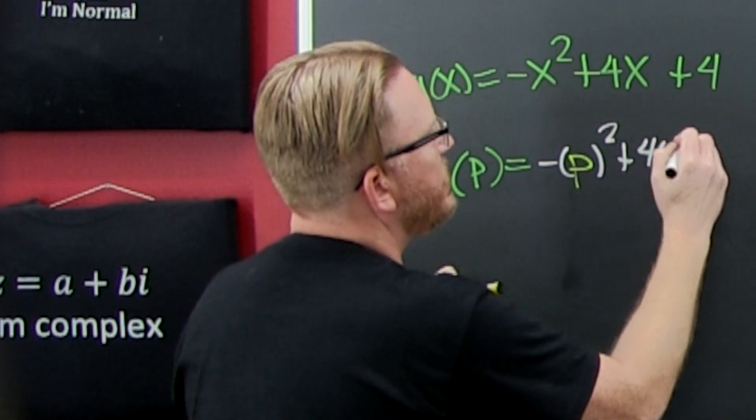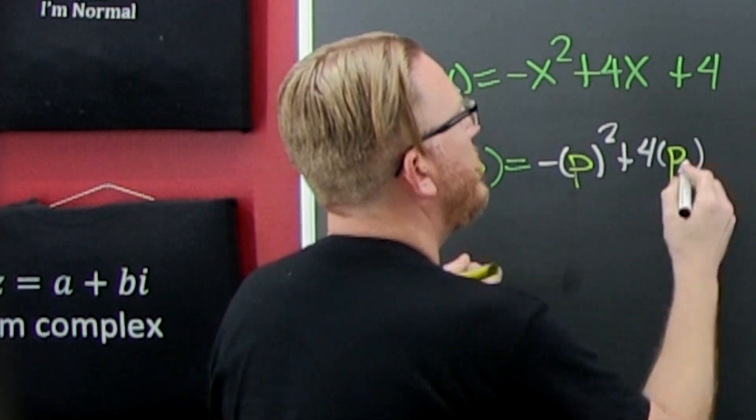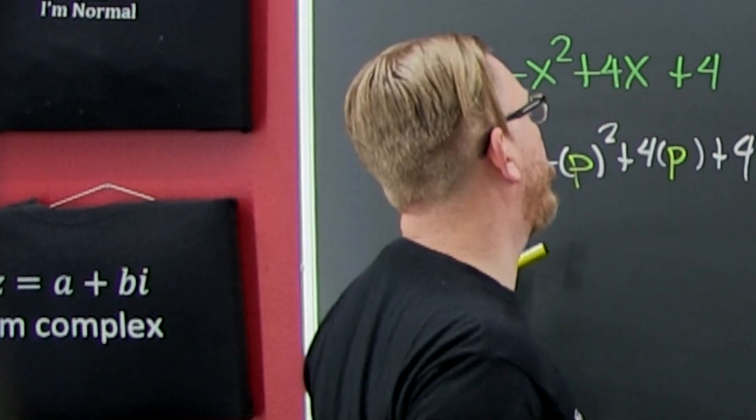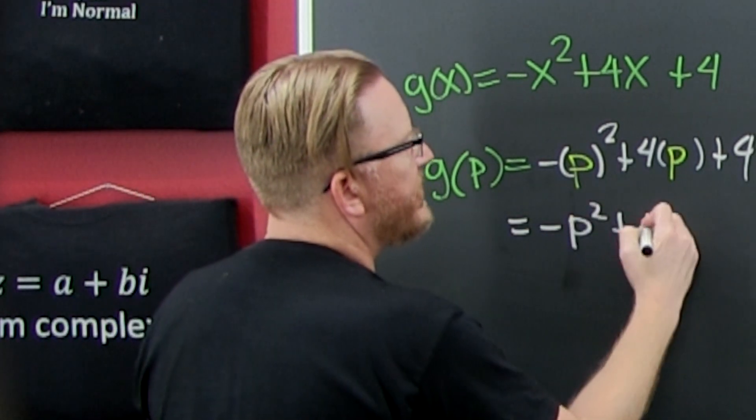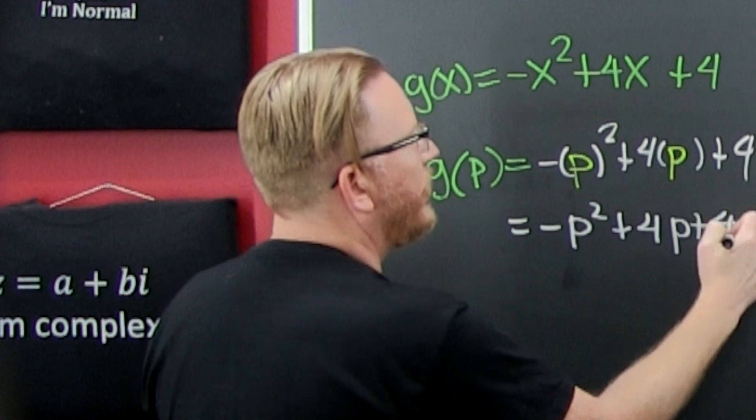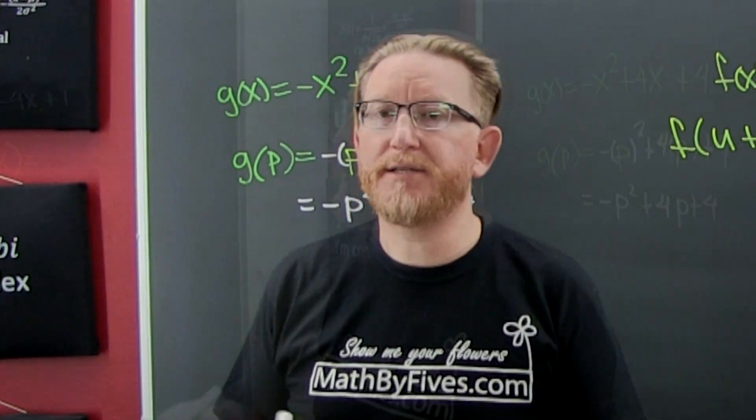That's a square right there, then I'm going to add four times p, and then add four. Could I clean it up? Absolutely. That's -p² + 4p + 4, and you're done.